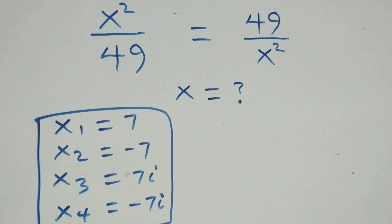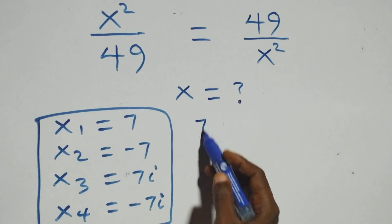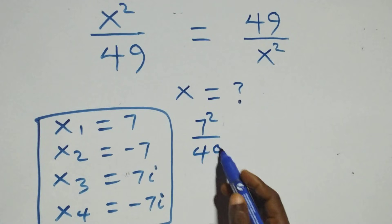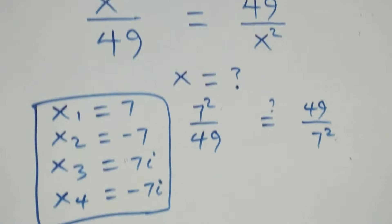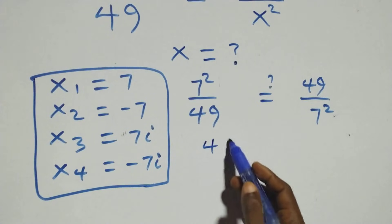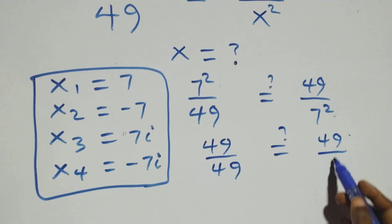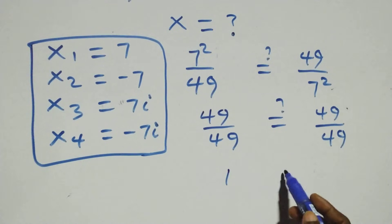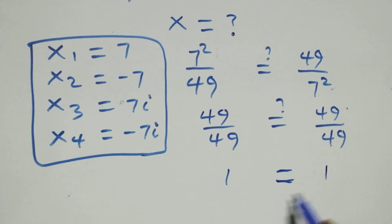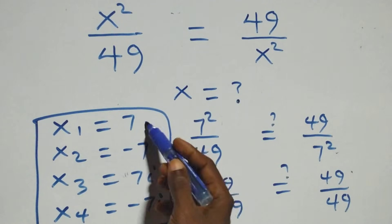Let's check by substituting x equals 7 into the original equation. We get 7 squared over 49, which is 49 over 49, equals 49 over 7 squared, which is also 49 over 49. That gives 1 equals 1, so the left-hand side equals the right-hand side. Therefore x equals 7 satisfies the given equation.